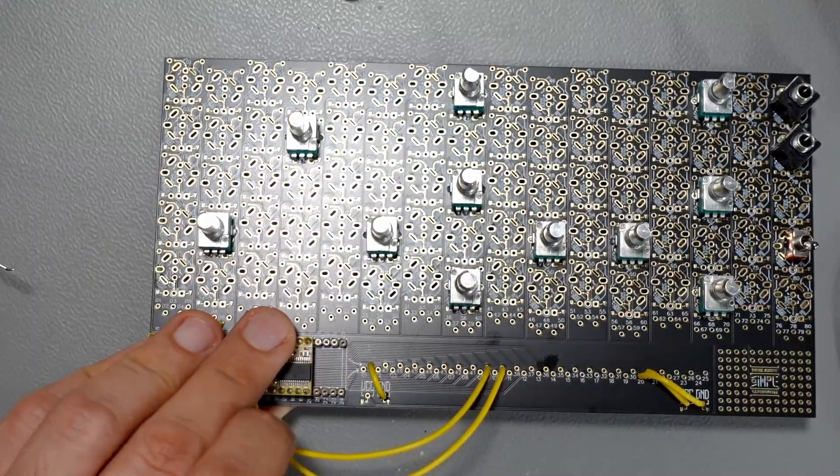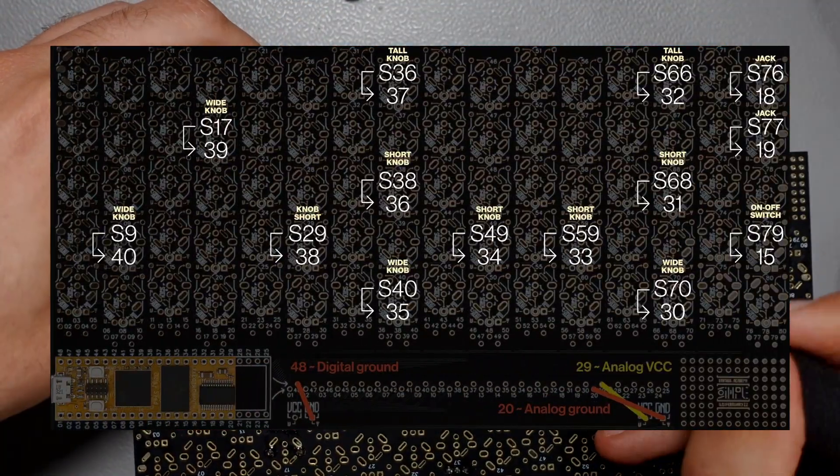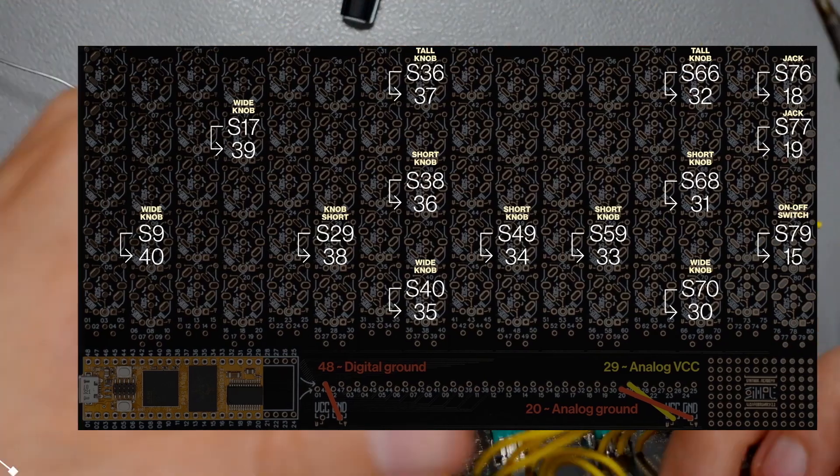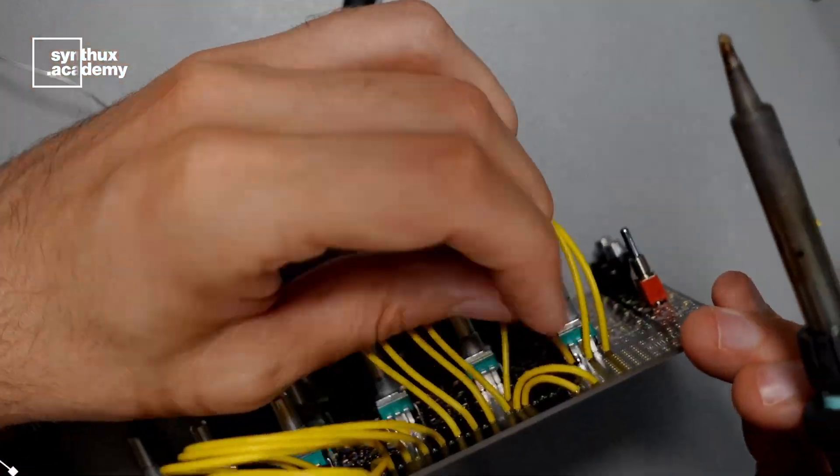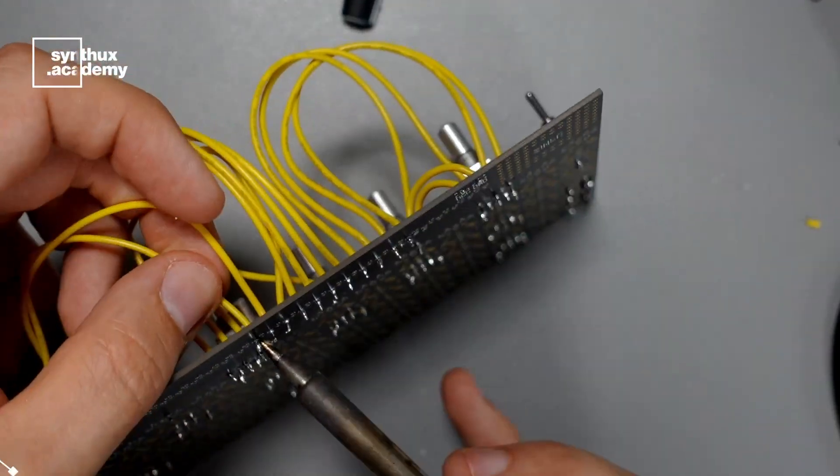From here, you can simply continue following the diagram on GitHub. And when you're done, the build itself is pretty much ready. The only thing left to do is to upload the synthesizer program on the daisy. So we're going to be doing this in the next step.